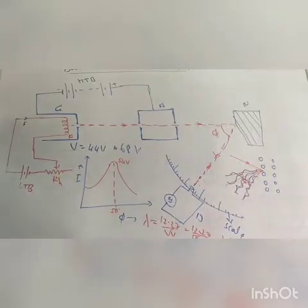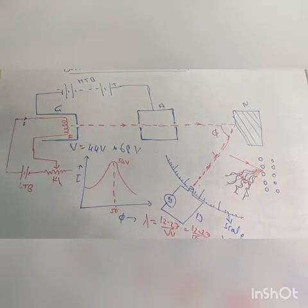Davison and Germer experiment. The wave nature of the electron beam was experimentally demonstrated by Davison and Germer in 1927.